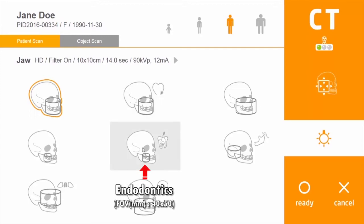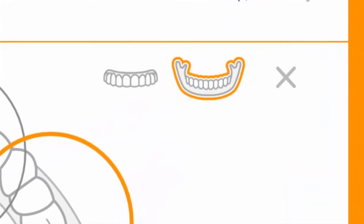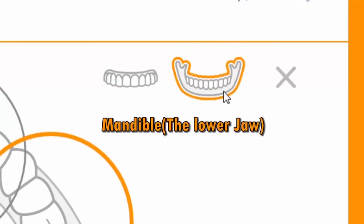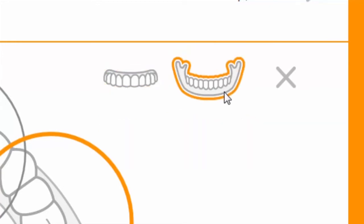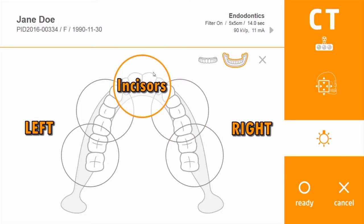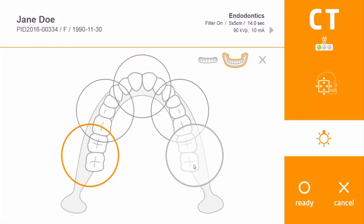Click the endodontics protocol and select the desired area for acquisition. Go to area selection and select the maxilla or mandible icon. Next, go to arch image and select the area you want to scan. There are five different tooth areas: incisors, premolars, and molars area.